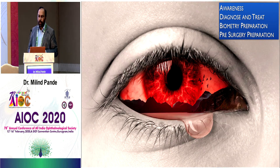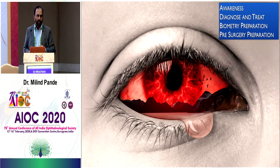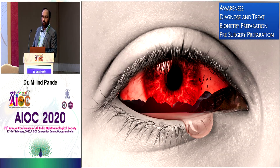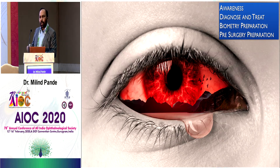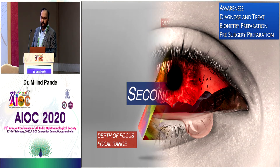One must diagnose and treat dry eye or ocular surface disease — this is very common and catches quite a lot of people out, especially before biometry. It's important to get the surface right during surgery too, because dry eye can increase glare, halos, and contrast issues. It becomes very difficult after surgery to then tell the patient they have dry eye if you didn't inform them initially.